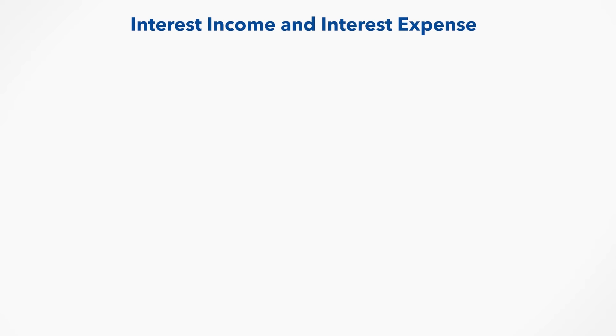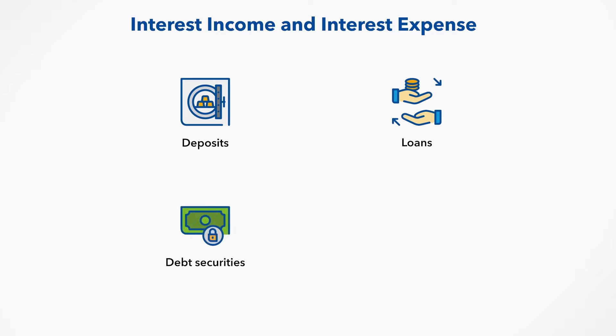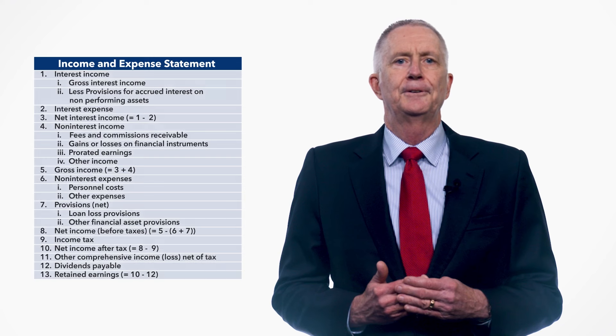Let's look at the definitions prescribed in Chapter 5 of the 2019 FSI's guide for the elements of the Sectoral Income and Expense Statements or, in IFRS terms, the Statement of Profit and Loss. We will use the deposit takers sector as our example. Note that many of the definitions are also applicable to the other financial corporations, or OFC, subsectors. Interest income and interest expense is a form of income and expense that accrues on debt instruments such as deposits, loans, debt securities, and accounts receivable or payable. The income and expense statement for deposit takers has 13 lines.